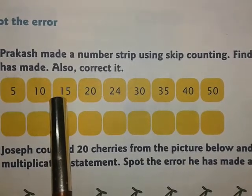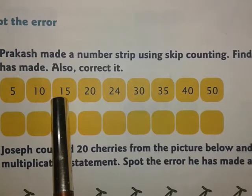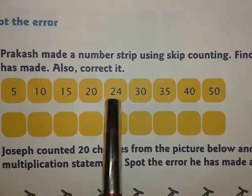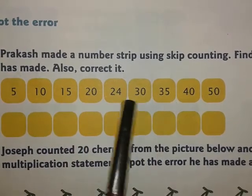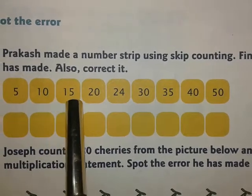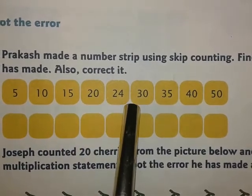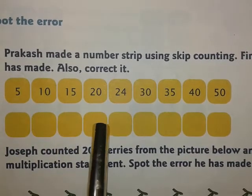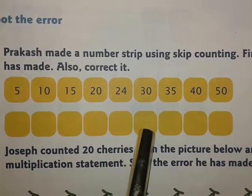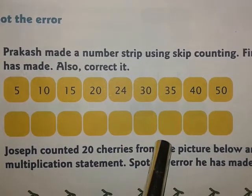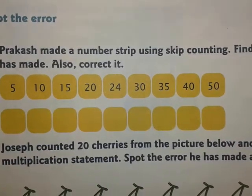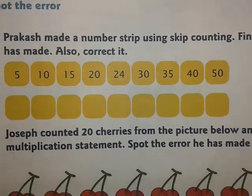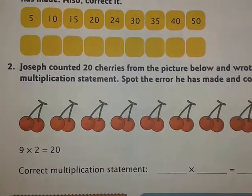5 numbers are skipped and the next number is written in the next box — 6. So there is a mistake over here. I hope by this time all of you have seen the mistake. In this line you will write the correct numbers that the number step should have. And the number 2.